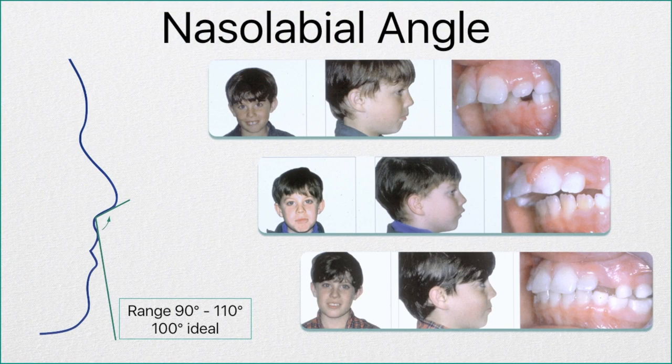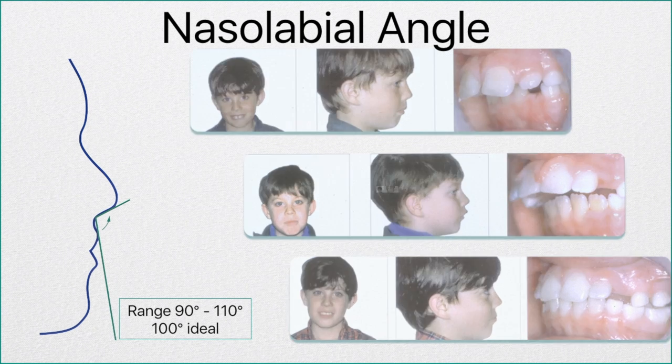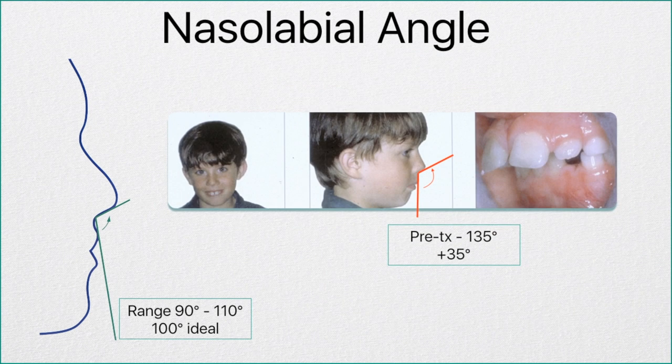Let's look at a typical Class II case. Here's a young boy who has a Class II Division I malocclusion with a very large overjet. You can see the progression of treatment from beginning to finish using orthotropics. He starts out with a 135 degree nose lip angle, which really says his maxilla is too far back — it needs to be moved forward.